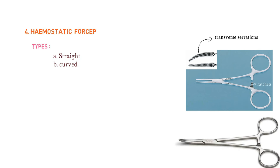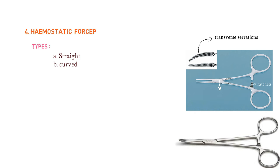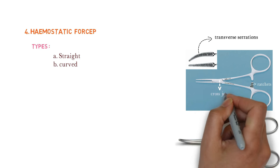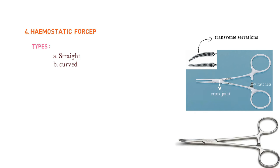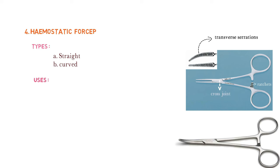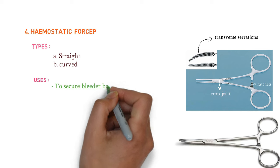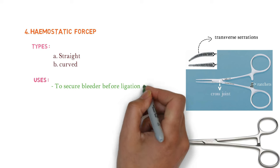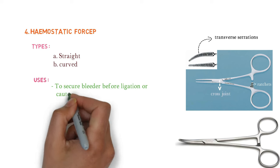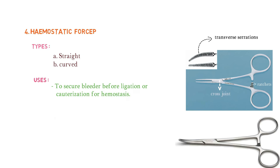The hemostatic forceps has ratchets with finger grip and a cross joint. These are the parts of hemostatic forceps. The obstetric uses include: to seize a bleeder before ligation or cauterization for hemostasis, and to hold ligatures to be kept long.